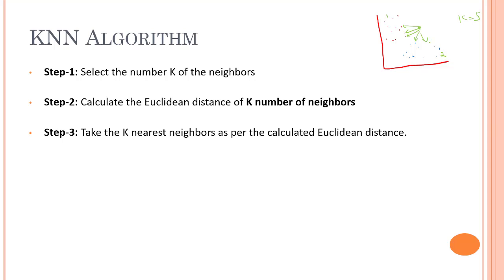By knowing the Euclidean distance between the points, we find out which five points are nearest to our new data point. We take the K nearest neighbors as per the calculated Euclidean distance — these are the five nearest points to the new data point.